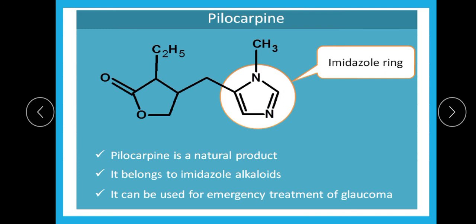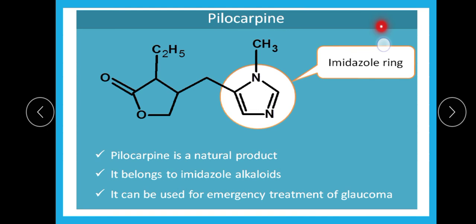Looking at the pilocarpine structure: the structure and IUPAC are not commonly asked in exams. The key thing you should know is that pilocarpine contains an imidazole ring. It is an imidazole ring-containing drug — a cholinergic drug belonging to the imidazole alkaloids — and it is used in the treatment of glaucoma. These two facts are what you should remember.